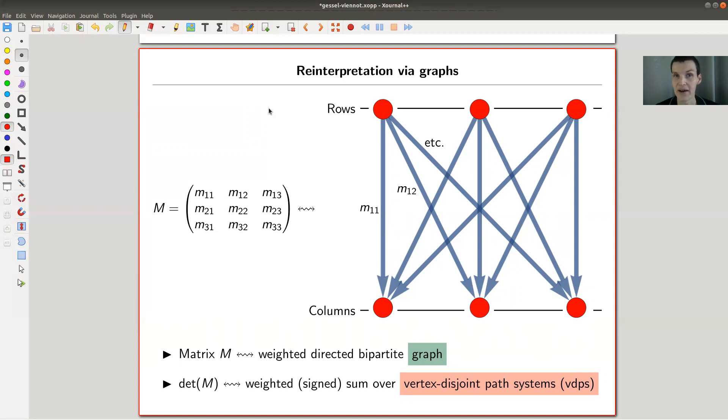So let's have a look at the determinant as a description of a graph. So what they explain is the following. I stay with my three by three example. So we write down the rows and the columns, just one vertex for each row and one vertex for each column.